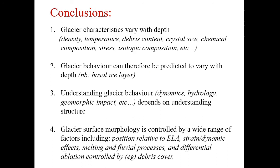To finish off: glacier characteristics vary with depth — many different things vary from the surface through the interior down to the bed — and therefore glacier behavior varies with depth too. This is particularly true once you get to the basal ice layer, which we'll talk about next. Understanding how glaciers behave in terms of dynamics, hydrology, and geomorphic impact requires us to understand these variations through the structure of a glacier. We've just looked at how even surface morphology is controlled by a wide range of factors, and importantly how you can read surface morphology to infer aspects of dynamics or other parts of the glacier system — that's a really important aspect of the way geographers look at glaciers.